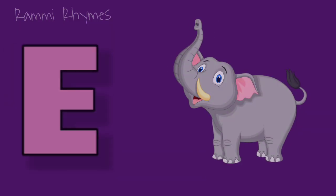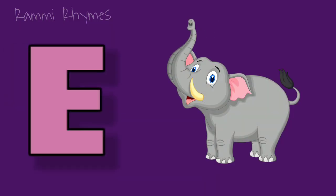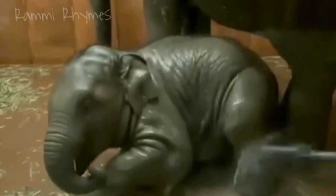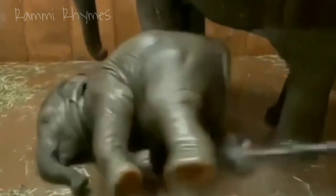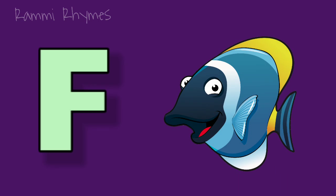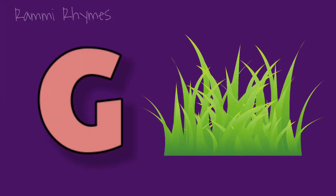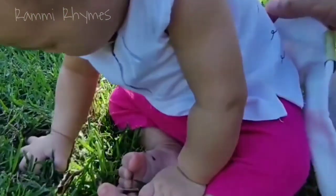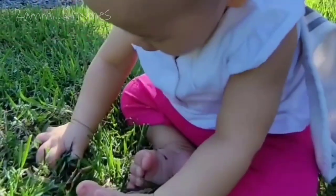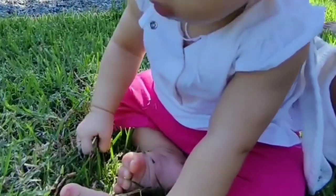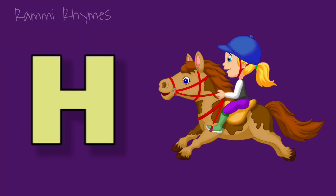E is for elephant. F is for fish. G is for grass. H is for horse.